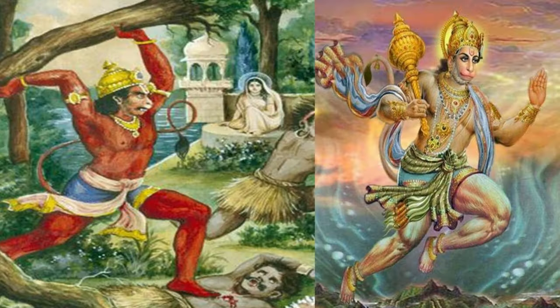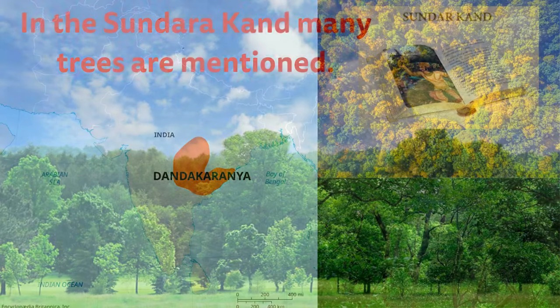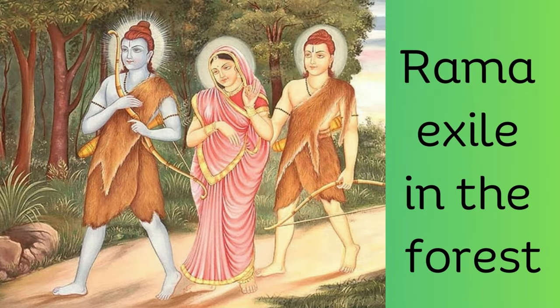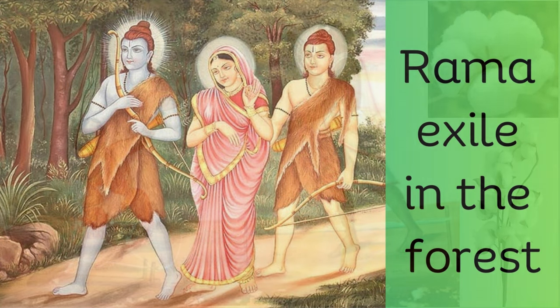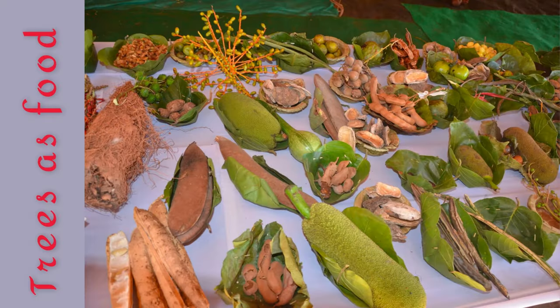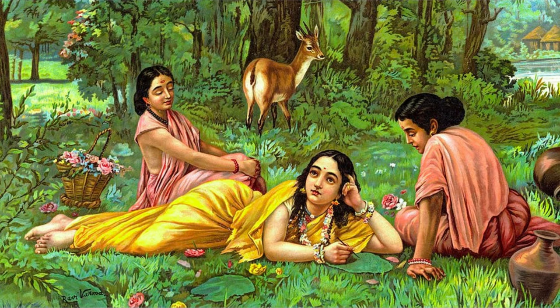Angad, who visited Lanka for diplomacy, and Hanuman, who went to Lanka in search of Sita, both came across many species of plants. Rama, Lakshmana, and Sita spent years in exile in the forest. During this period, the forest produce played an important role in meeting their needs for food, shelter, clothing, and more.